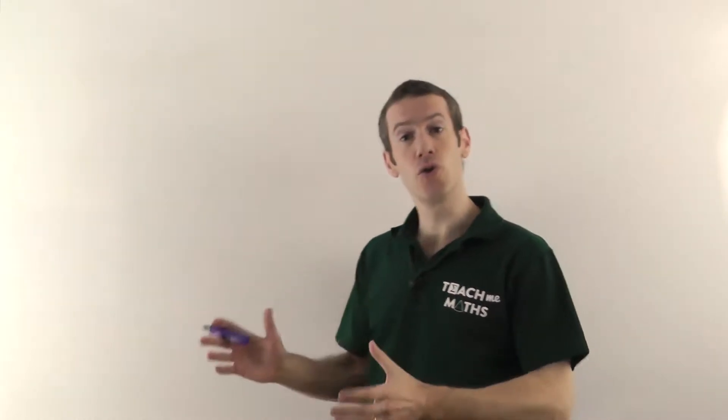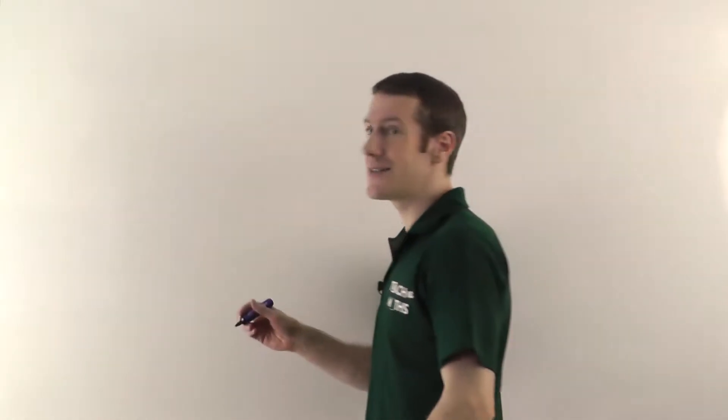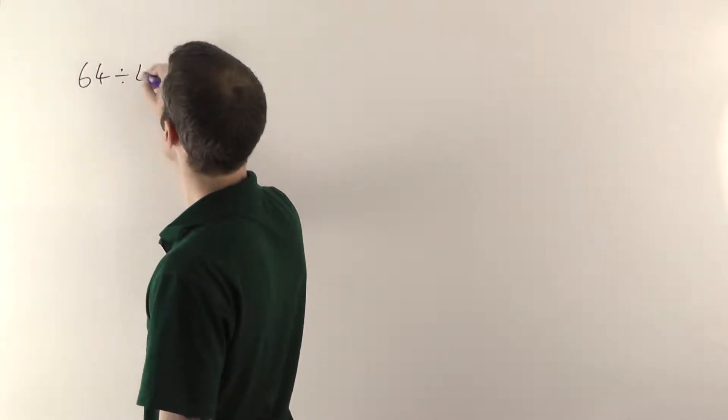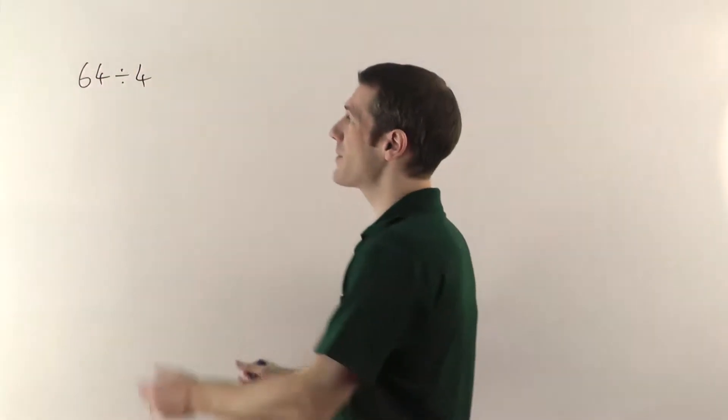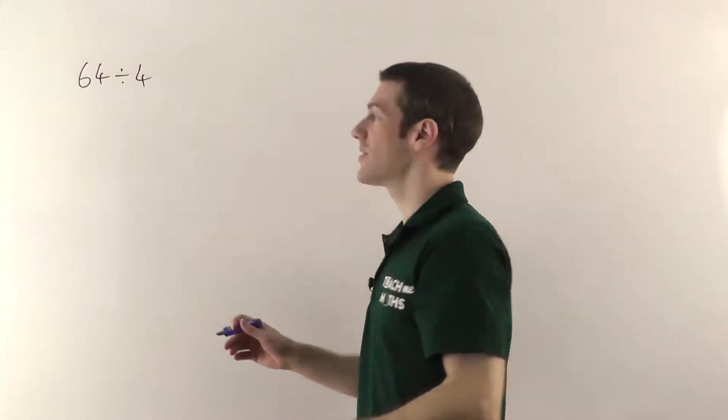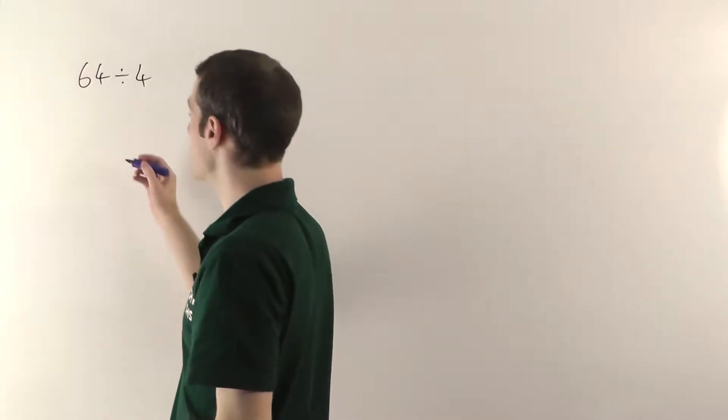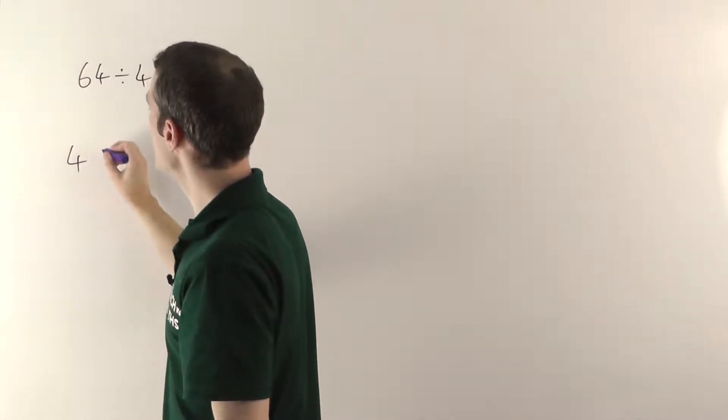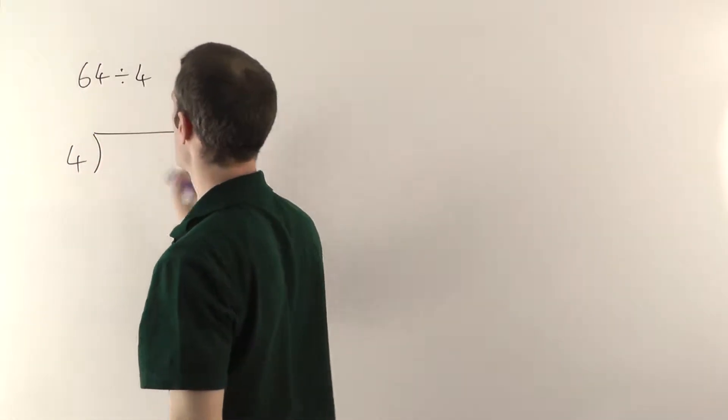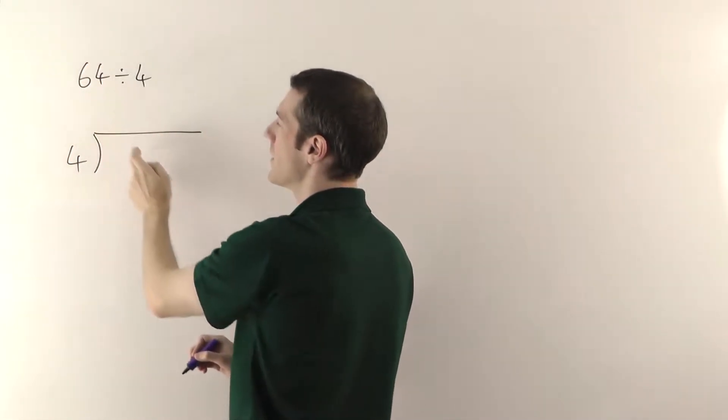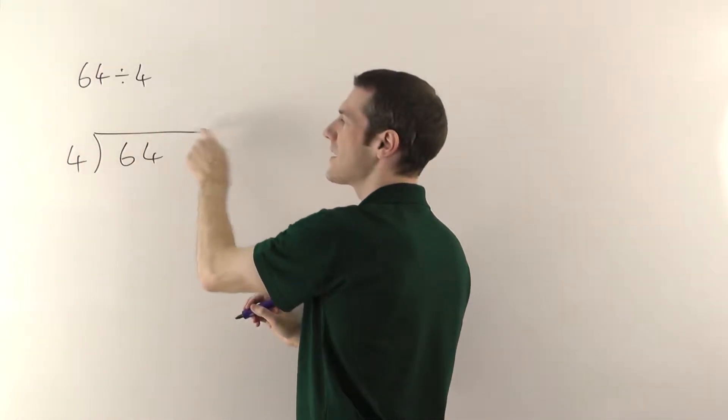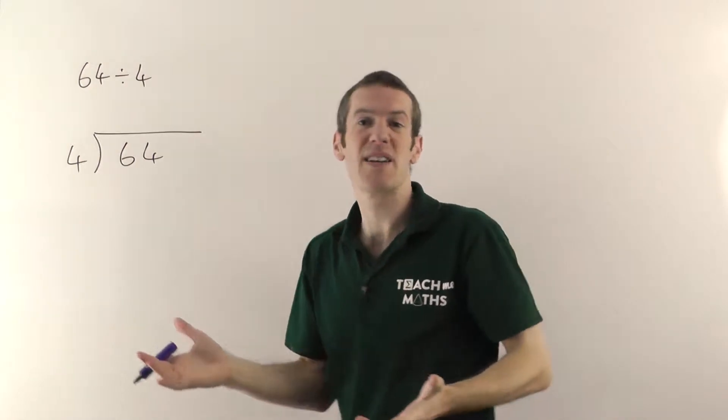If you're interested in long division, go watch the long division video. This is just going to be short division. So we'll start with a nice easy example: we'll do 64 divided by 4. You're saying how many times does 4 fit into 64. Now this is going to be the traditional method, the bus stop method as it's sometimes called. The small number that you're dividing by always goes on the outside. You draw your bus stop, and then the big number goes underneath the bus stop.